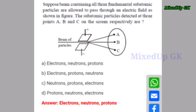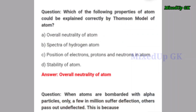Next question: which of the following properties of atom could be correctly explained by Thomson's model of atom? The correct answer is option A — overall neutrality of the atom.